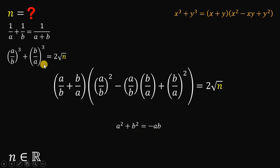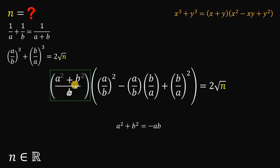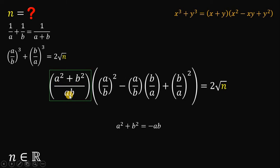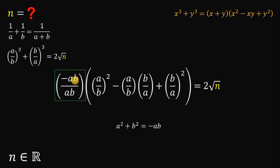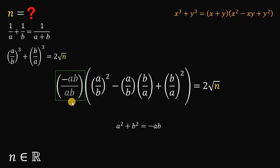Now let's focus on the expression a over b plus b over a. Simplifying this as a single fraction gives us (a squared plus b squared) over ab. Since we found that a squared plus b squared equals negative ab, we can substitute that in. So negative ab over ab is just negative 1.